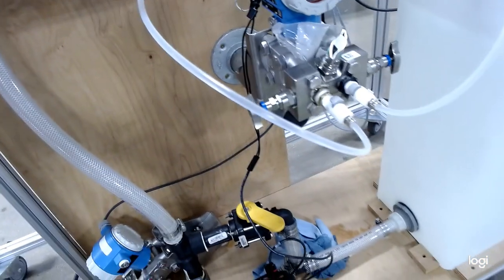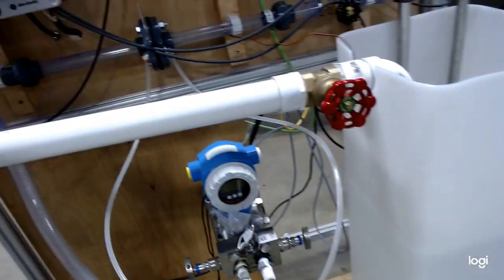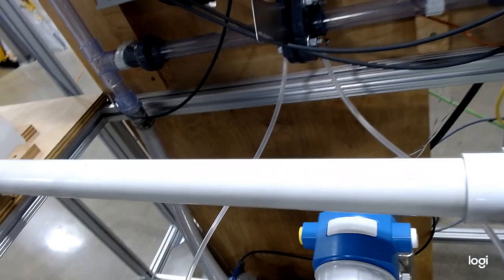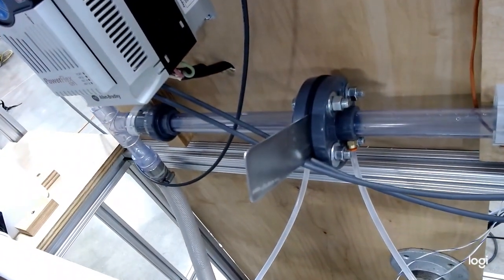Now the low side port is gonna go to the downstream side of the orifice plate. It's gonna come over here and connect to the downstream side.